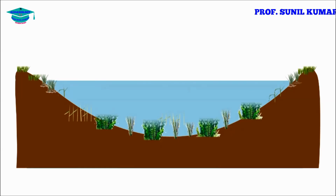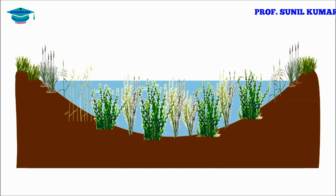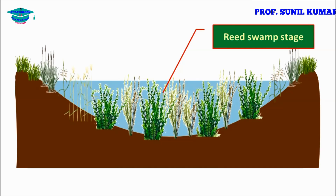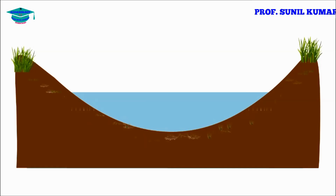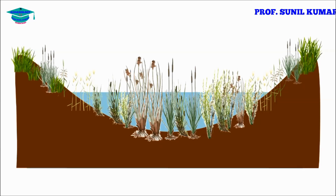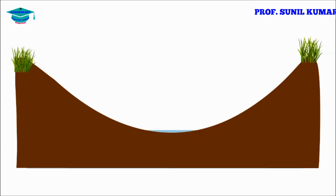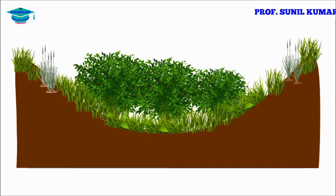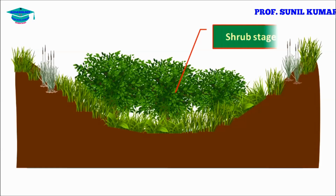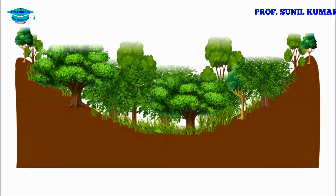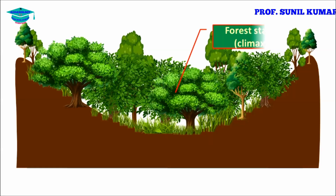After the floating plant stage, a reed swamp stage develops with small plants. This further develops into a marshy meadow stage, then a shrub or small forest stage, and finally grows into a complete forest — the climax community. So from open water, hydrarch succession reaches all the way to a forest climax stage.